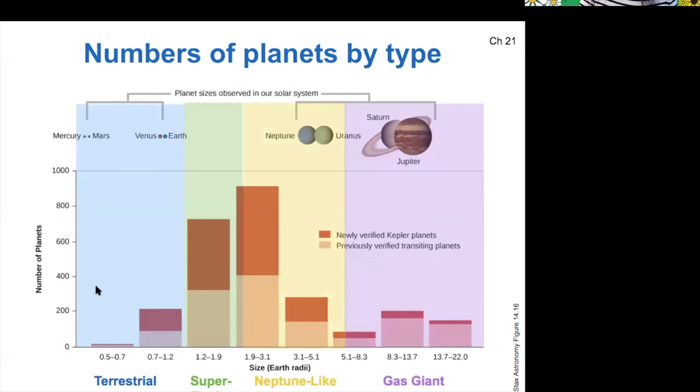So there are very few terrestrial planets that have been discovered. Part of this is just because they're harder to measure.